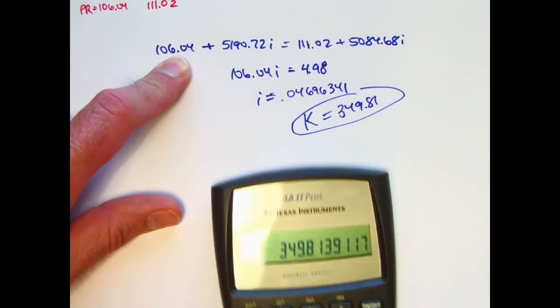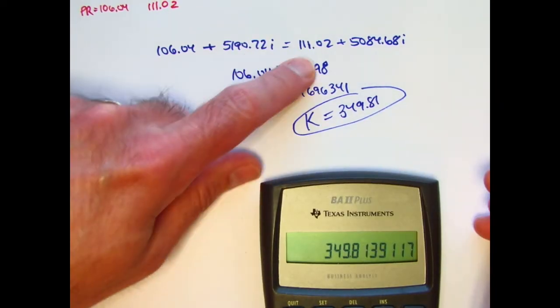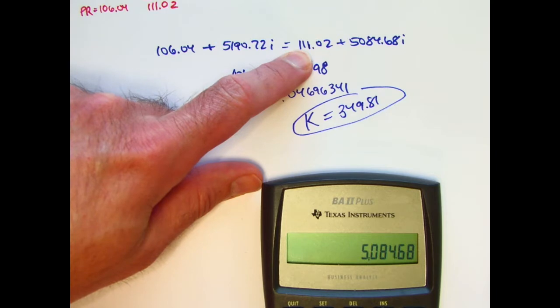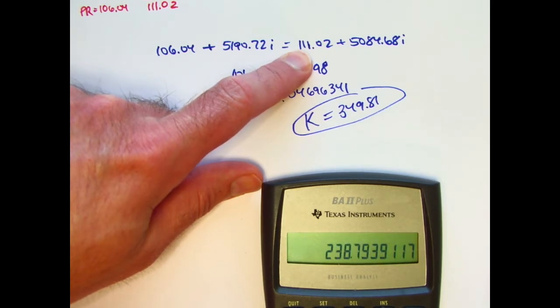And by the way, that is correct. I've double-checked that. Let's see that we get the same thing if we plug it in on the right side. Take 5084.68 times I, which is in register zero here, and now add 111.02.